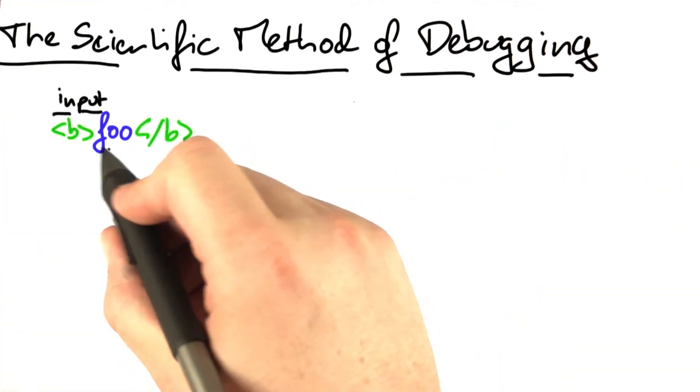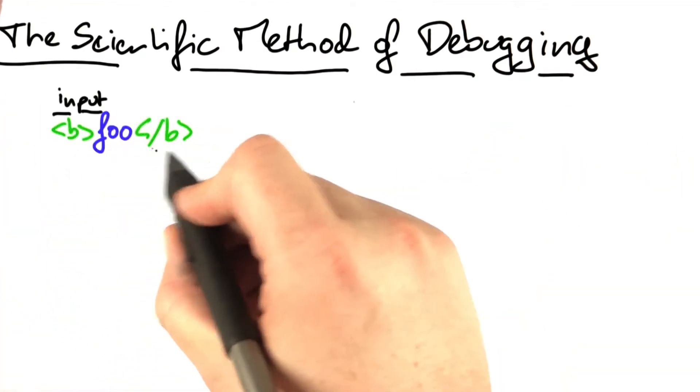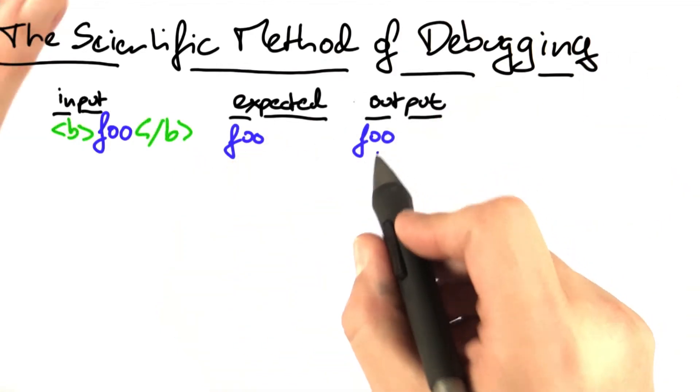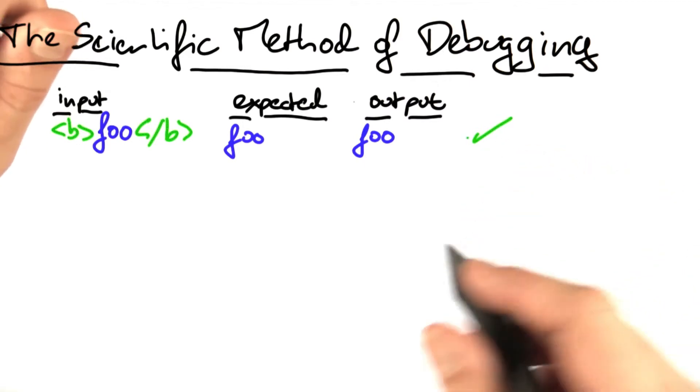If our input was foo in HTML markup, then we would expect the output foo. The actual output was foo, so this is just fine.